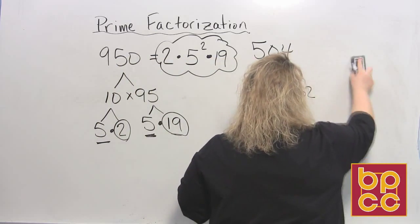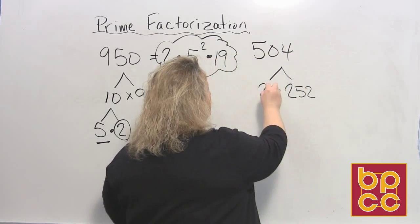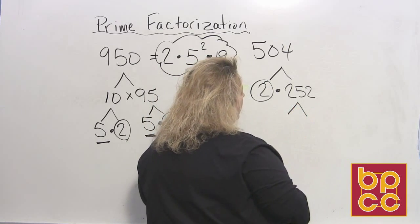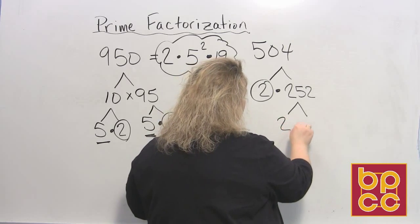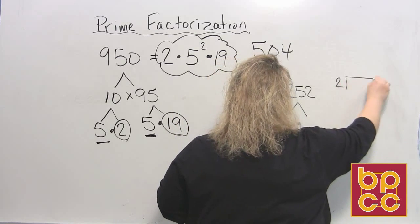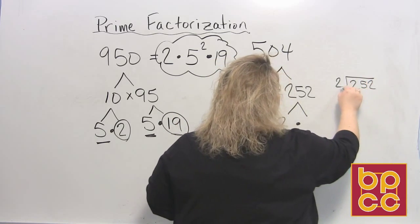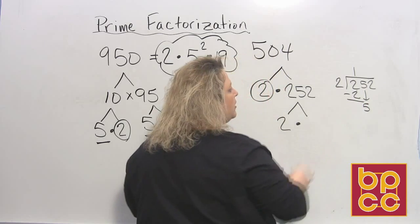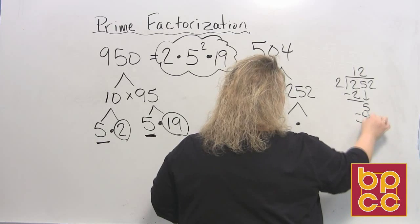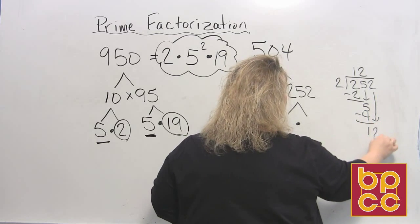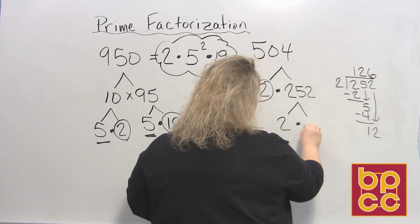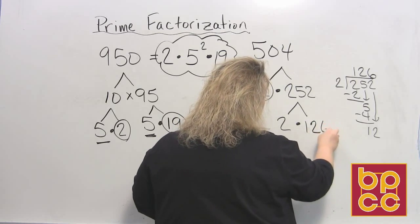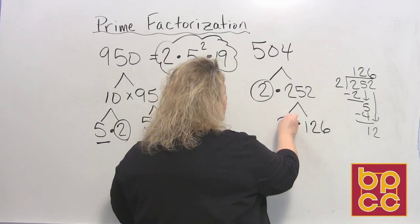And then we just keep going. Two is a prime number so we're going to stop there. I'm going to circle it so I don't forget it when I come to write my prime factorization later. Two goes into 252. Well let's try two again. So two divides in there. Get your little scratch paper out. 252. Two divides into two one time. Bring down the five because there was nothing left over. Two divides into five two times which makes four, leaves one. Bring down the last two. And two divides into 12 six times. So two times 126 makes 252.